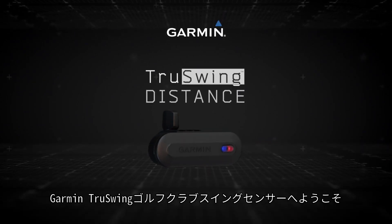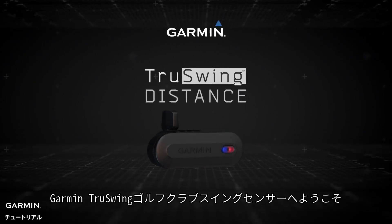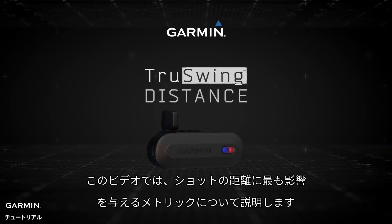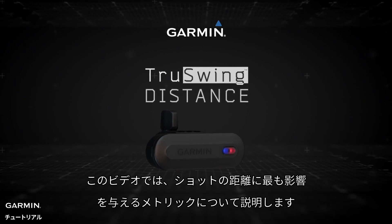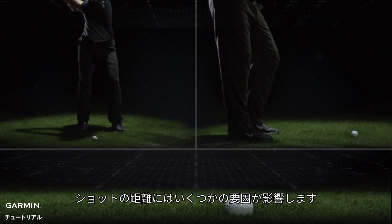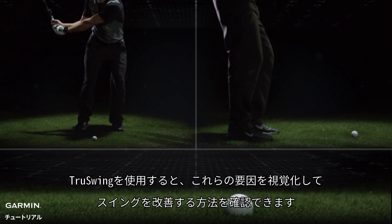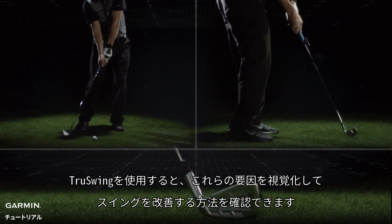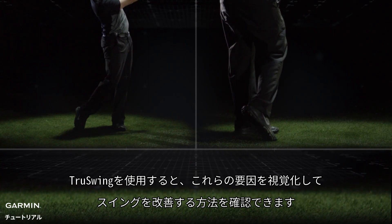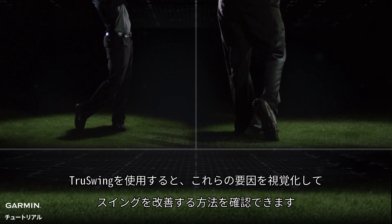Welcome to the Garmin TrueSwing Golf Club Swing Sensor. This video will explain the metrics that affect the distance of your shot the most. You influence your shot distance with several factors. TrueSwing allows you to visualize them so you can see how to improve your swing.